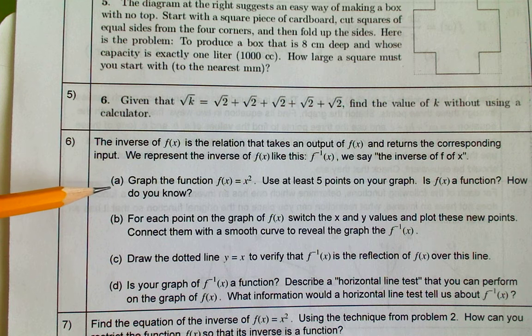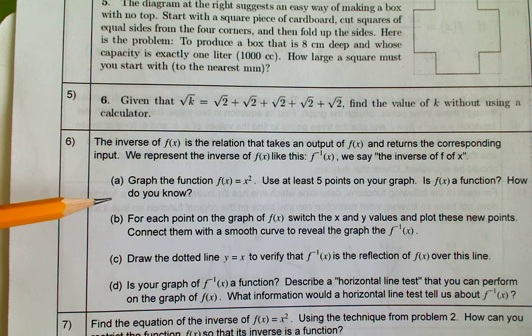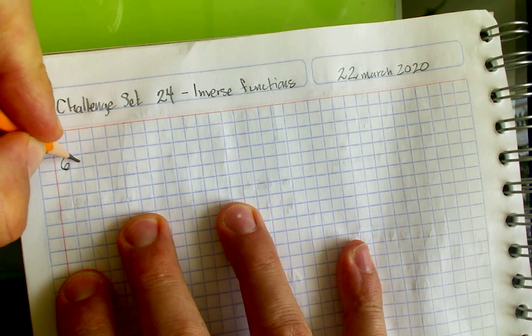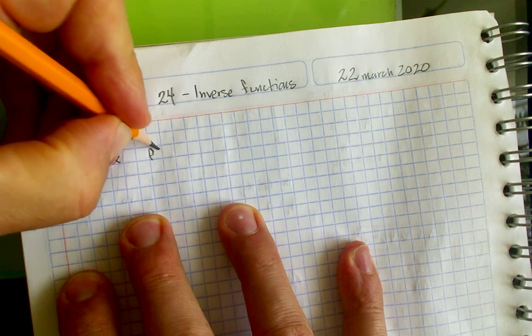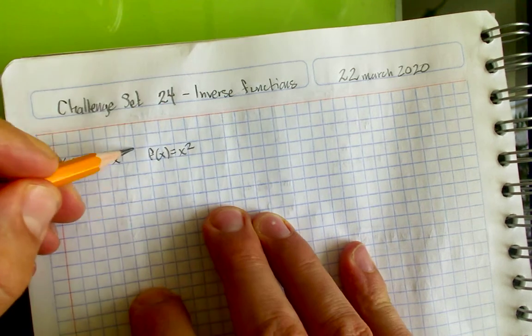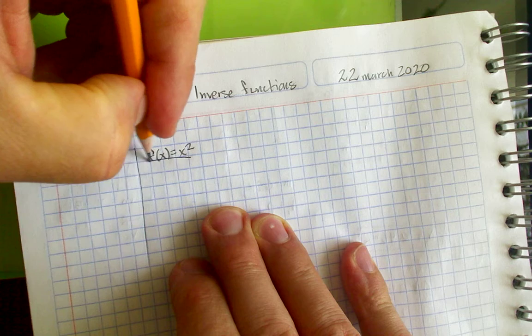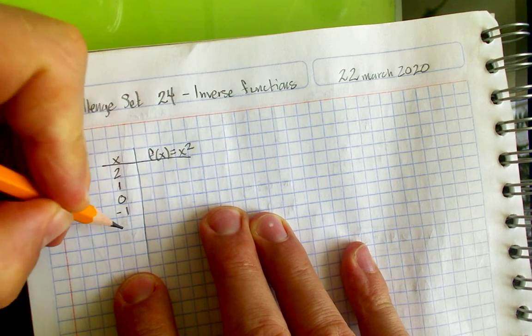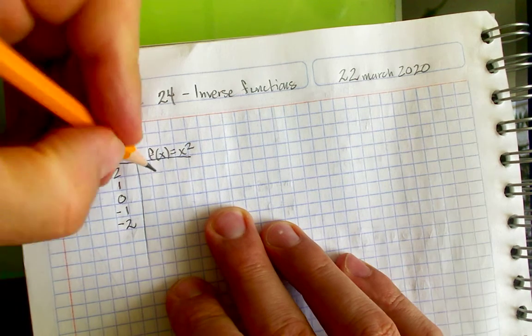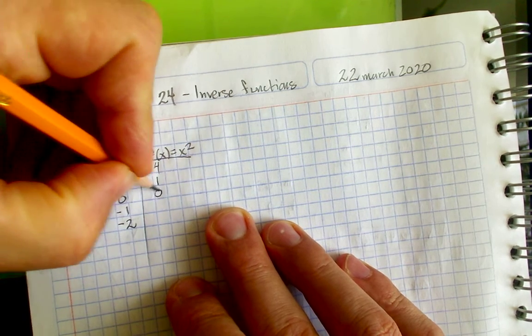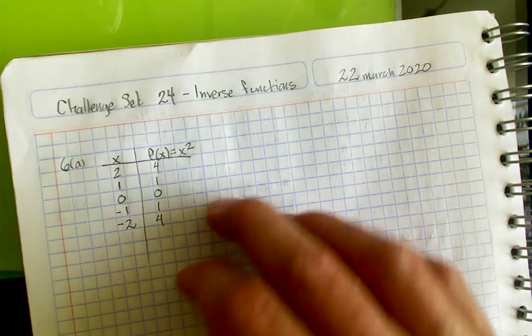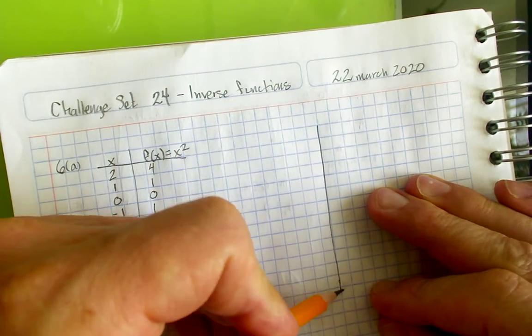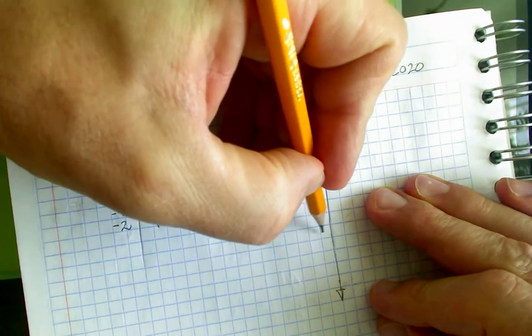We're asked here in part A to graph the function f of x equal to x squared and use at least five points. So let me just do that real quick and I'm going to do that by making a table. Here's my table and I need five points. Here are the five inputs that I'm going to use and when I square each of these I get the outputs like this. So that's my table of values.